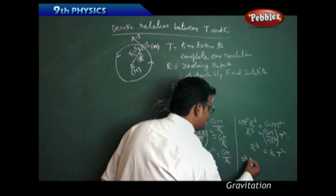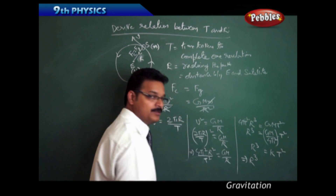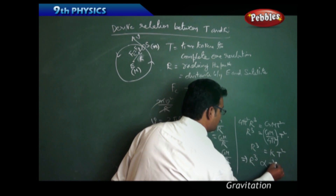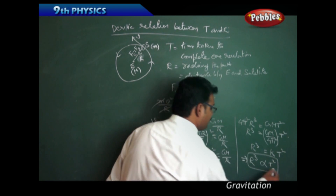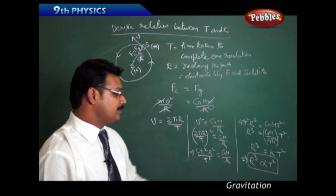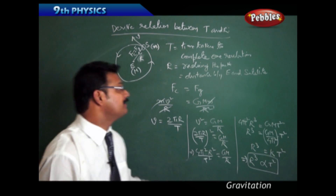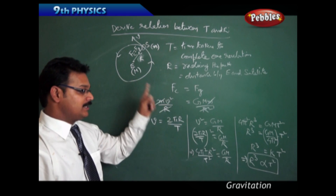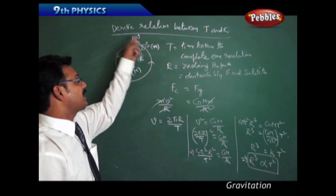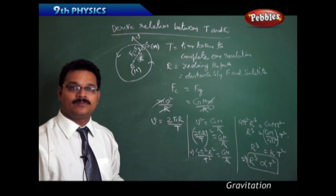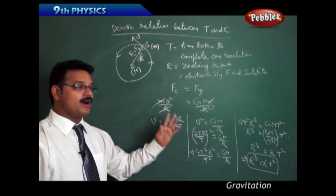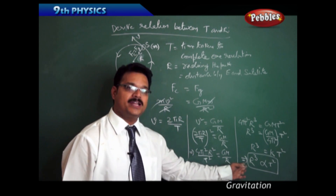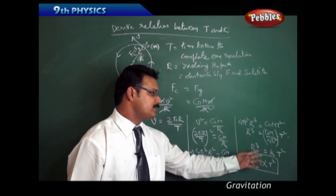To remove the constant in mathematics, we use proportionality. So we can say R³ is directly proportional to T². This means the cube of the distance between the satellite and the Earth is directly proportional to the square of the time of revolution — that is the relationship between R and T.